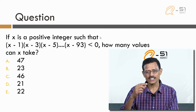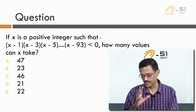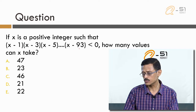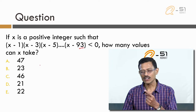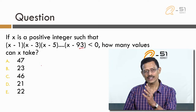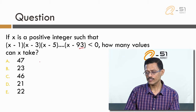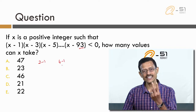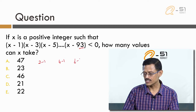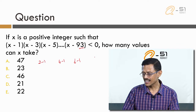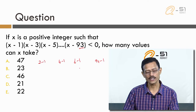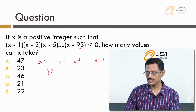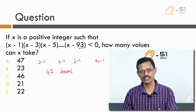Let us iron out a couple of things at the question stem level. We start with how many terms there are: starting with x−1 all the way up to x−93, where 1, 3, 5, 7 are all odd numbers. We can think of 1 as 2−1 (the 1st even number minus 1), 3 as 4−1, 5 as 6−1, and so on. The last number, 93, is 94−1, and 94 is the 47th even number. So there are a total of 47 terms in this product.